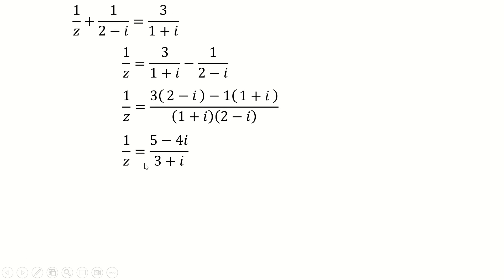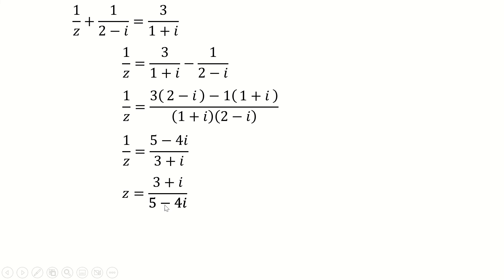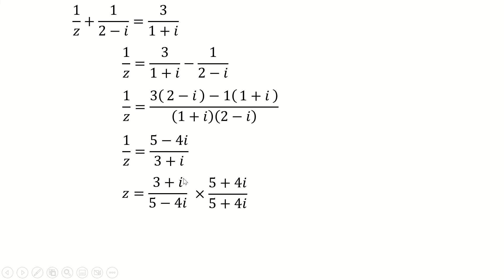We want to find z, so we reciprocate this fraction. So z equals 3 plus i over 5 minus 4i. We need to rationalize this fraction by multiplying by the conjugate of the denominator, which is 5 plus 4i, at both the numerator and the denominator.